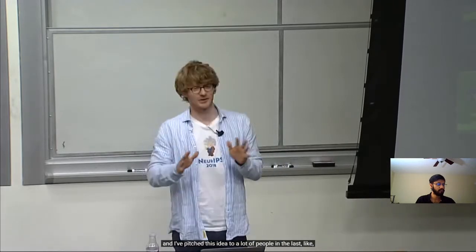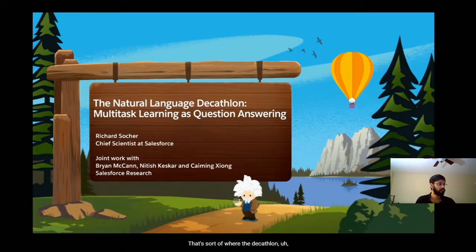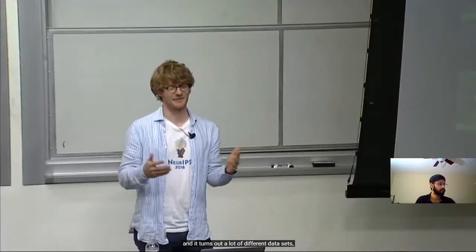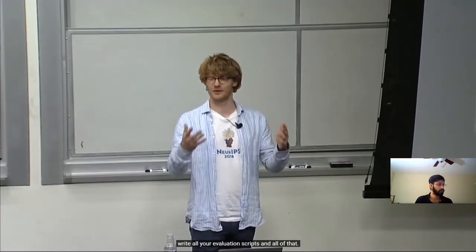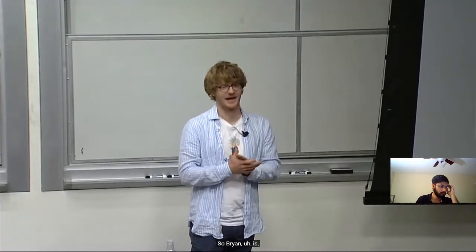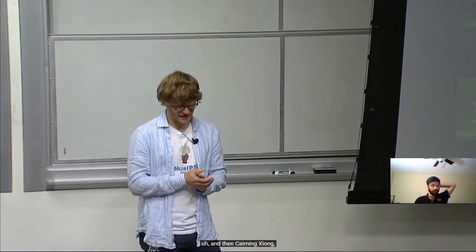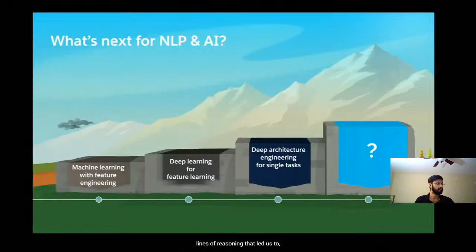I want to first give a big shout out to Brian McCann, he's the first author of this paper. I've pitched this idea to a lot of people in the last three to four years and most people were like this is too much pre-processing, because you're trying to do ten different tasks in one model — that's sort of where the decathlon wording comes in. But Brian really stuck to it, did all the pre-processing and all the things like tokenization. It turns out a lot of different datasets have a different conception of what a word is, and that changes how you write all your evaluation scripts.